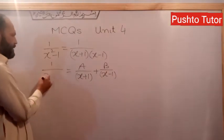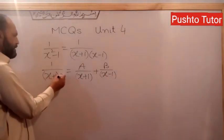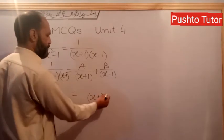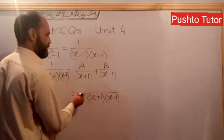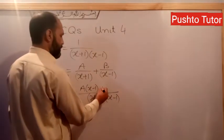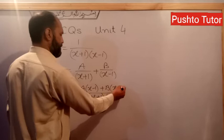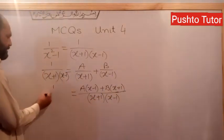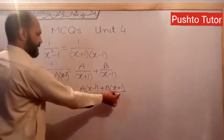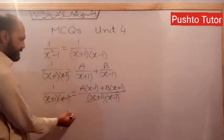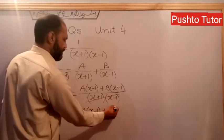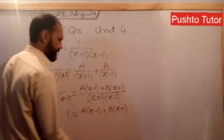So we have 1 over (x+1)(x-1) equals A over (x+1) plus B over (x-1). Multiply both sides by (x+1)(x-1). The denominators cancel, giving us: A·(x-1) plus B·(x+1).